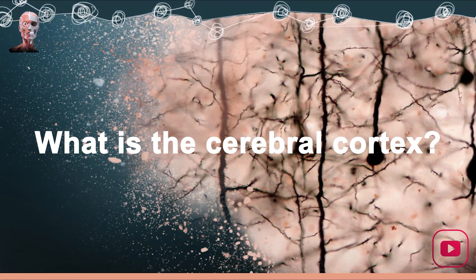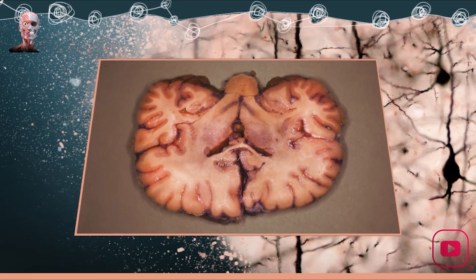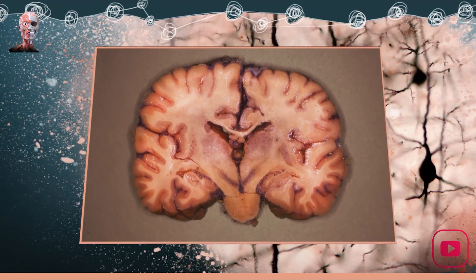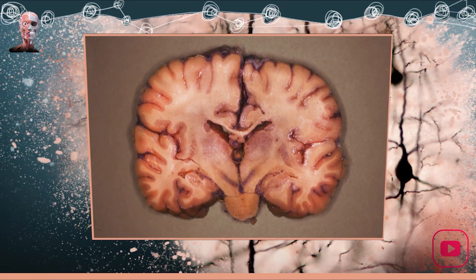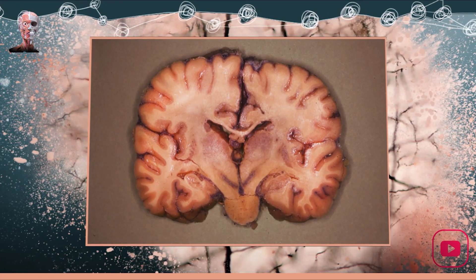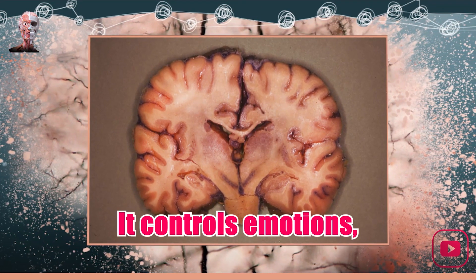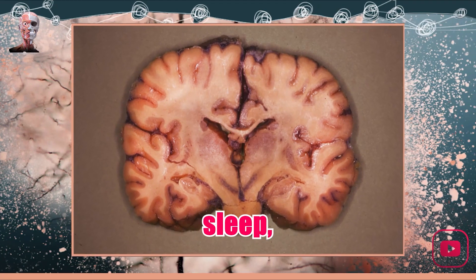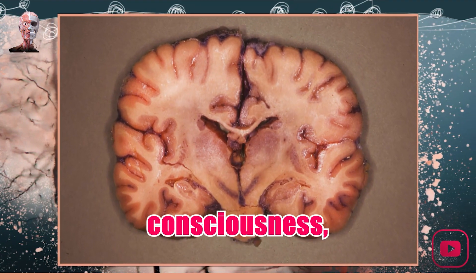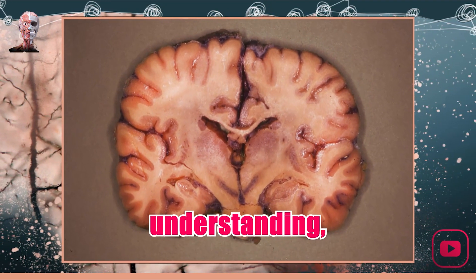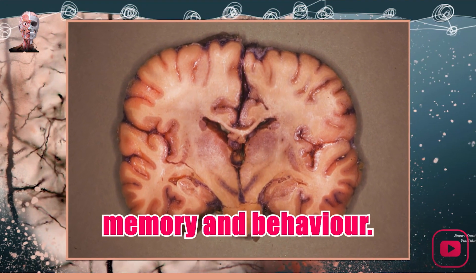What is the cerebral cortex? The outer layer of the brain is the cerebral cortex, also known as gray matter, which is only 2 to 4 millimeters thick. Its surface features ridges and grooves. It controls emotions, movements, sleep, wakefulness, consciousness, speech, language, thinking, understanding, learning, memory, and behavior.